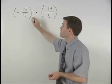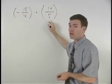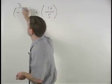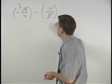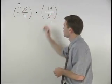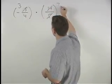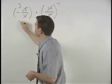So in this problem, the 15 and 5 cross cancel to 3 and 1. The 14 and 4 also cross cancel to 7 and 2.